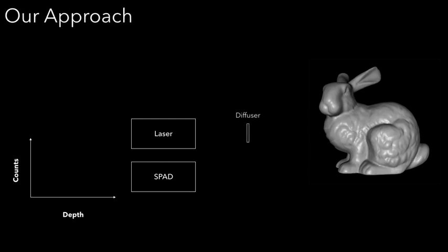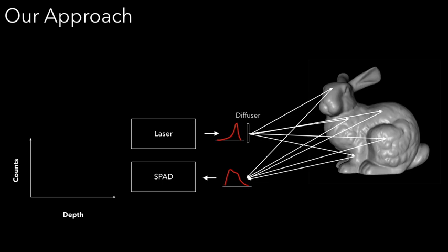In this work, we propose to use such a sensor in a slightly different configuration. We diffuse the laser to illuminate all scene points and record the reflected light with a diffused SPAD. The SPAD measurement, or transient, resembles a histogram of the depth map of the scene.